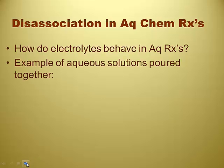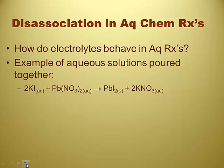An example of aqueous solutions being poured together would be like lead iodide and potassium nitrate, which we already know about. We already know both of these are soluble. They're both strong electrolytes. So this is a before and after situation — the reactants are before, in separate beakers. The potassium iodide is in a beaker, the lead nitrate is in a beaker, and you pour them together into the same beaker and get this stuff afterwards.